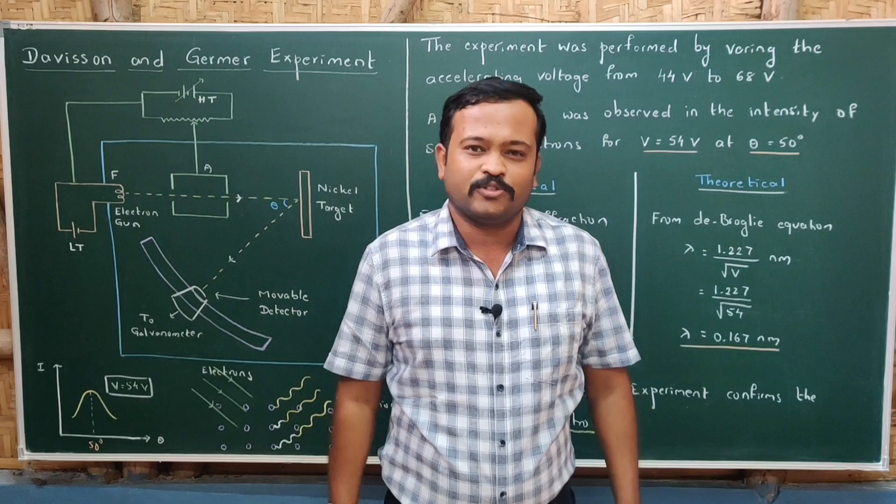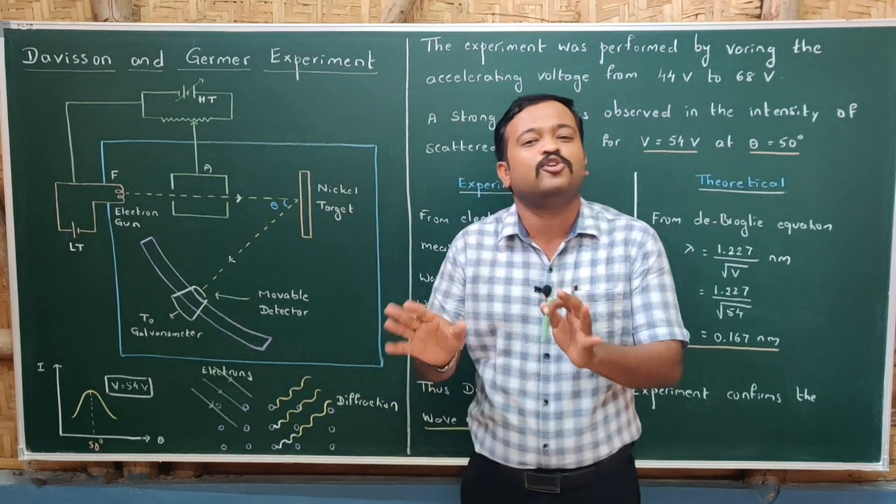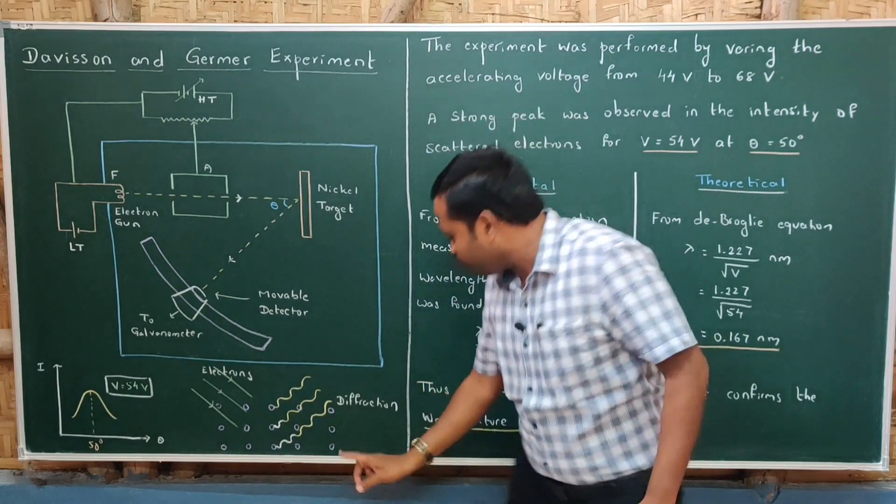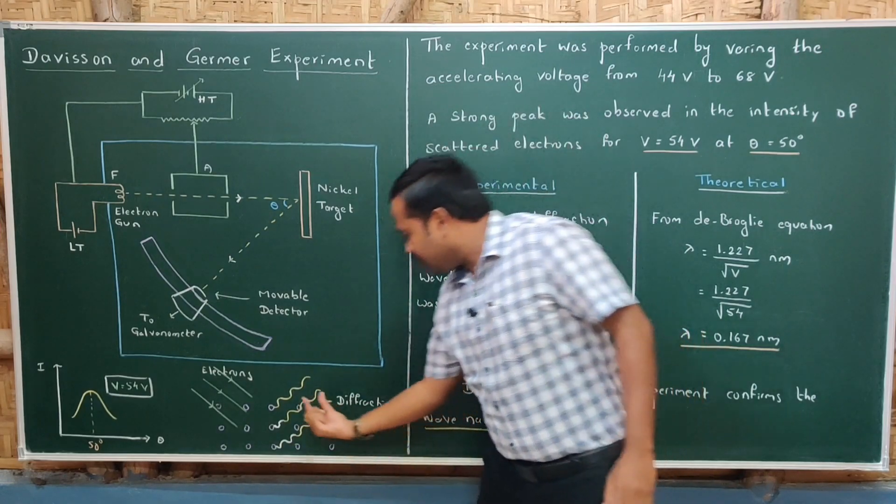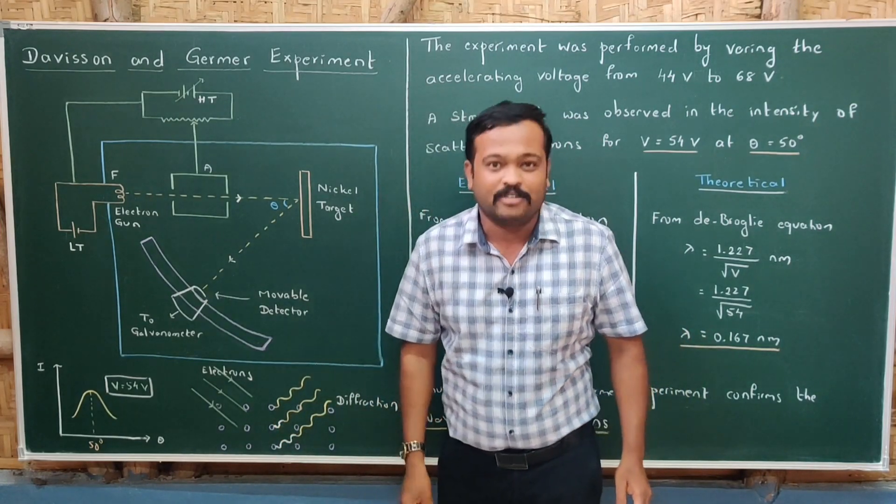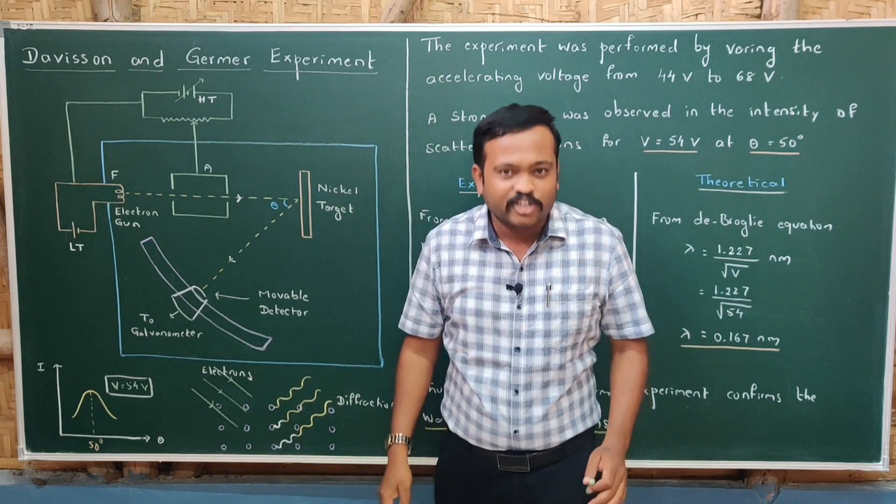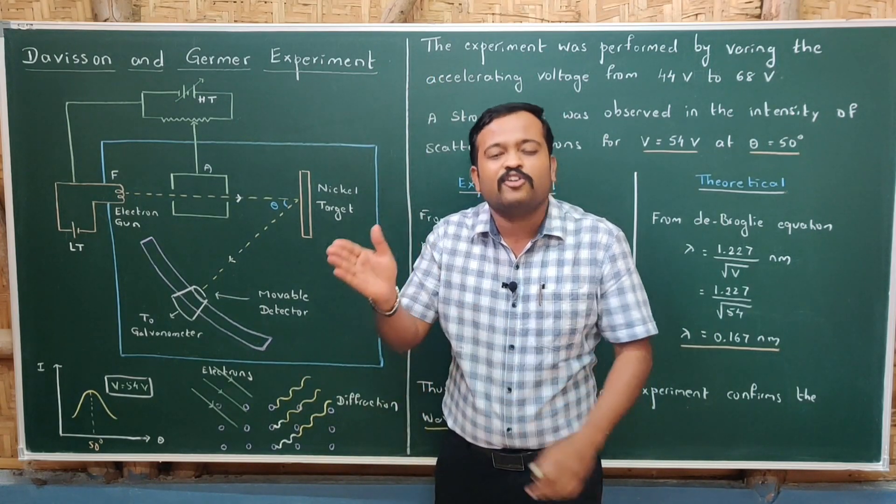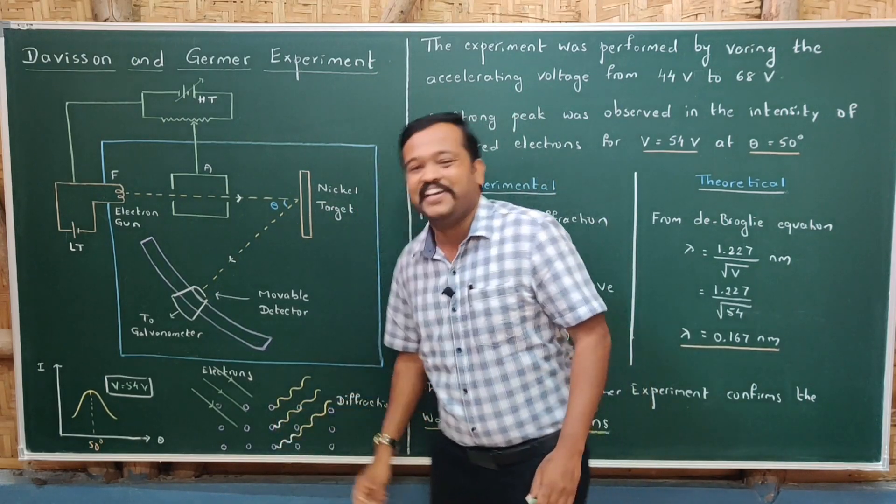From de Broglie's hypothesis, it was found that the wavelength of the electron was 0.1 nanometer, which was half of the distance between two nickel atoms. Since the distance between two nickel atoms was comparable with the wavelength of the electron, electrons undergo diffraction when they are incident on the nickel crystal.